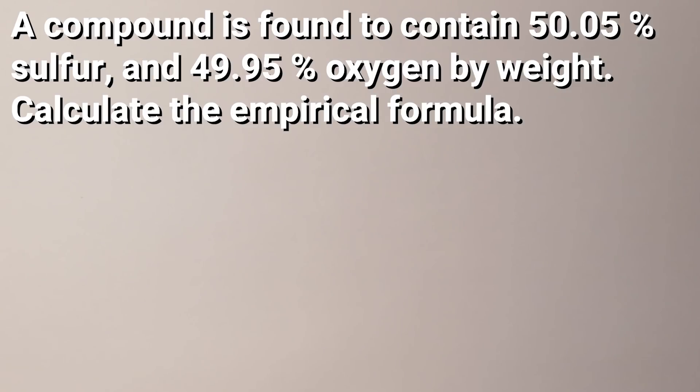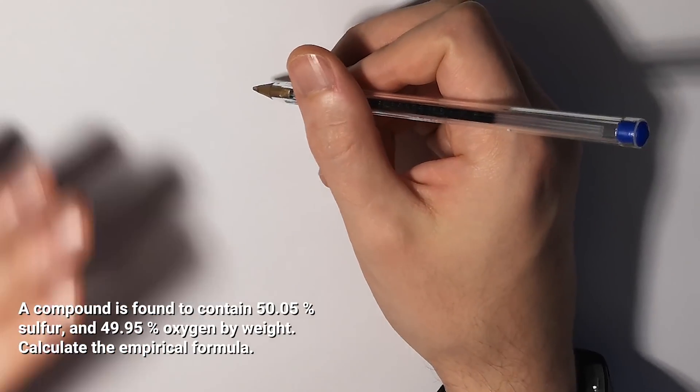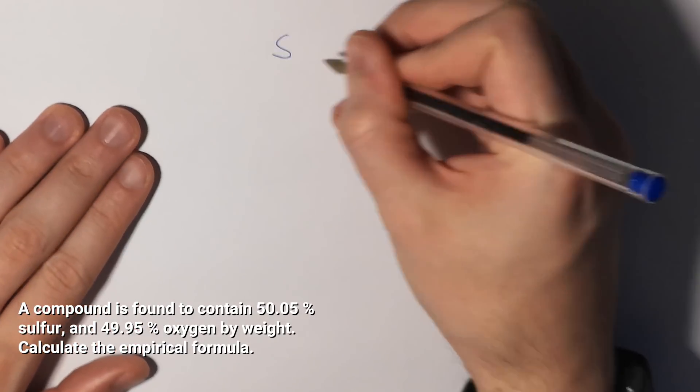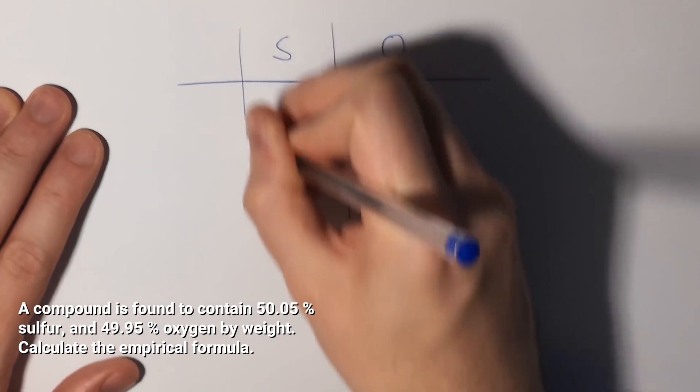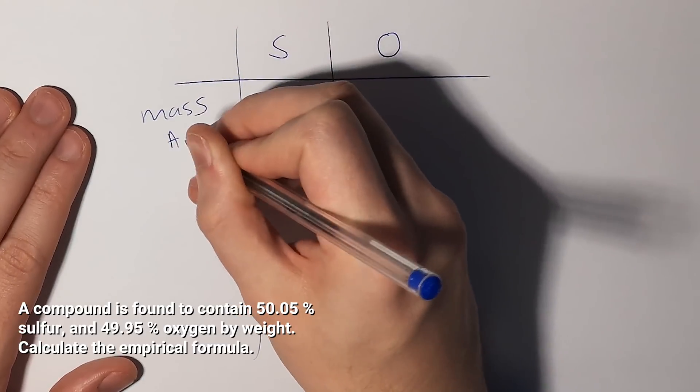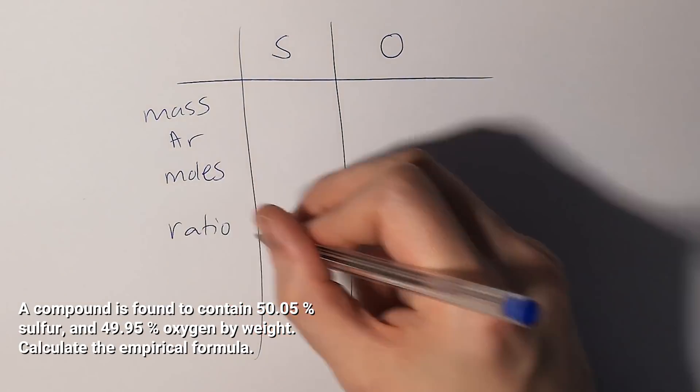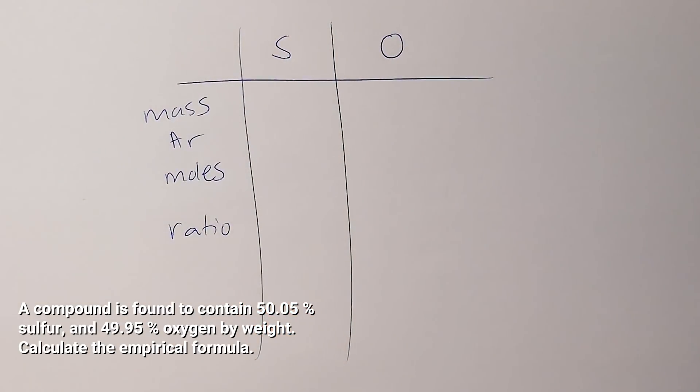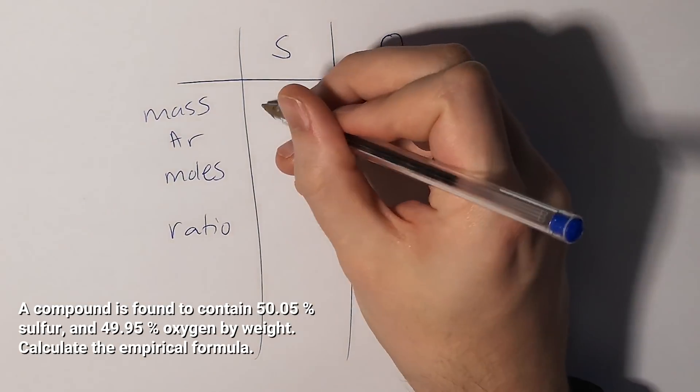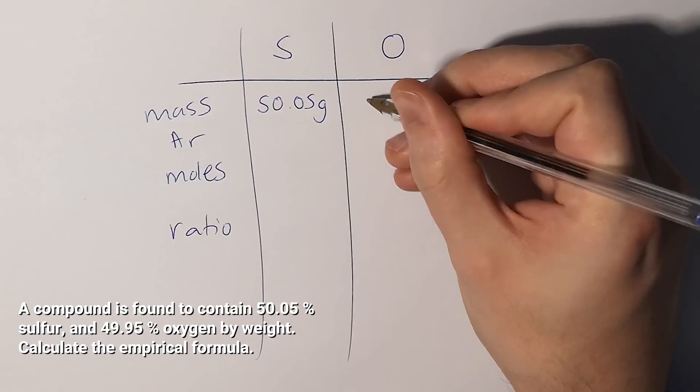What if the question says a compound is found to contain 50.05% sulfur and 49.95% oxygen by weight? We still draw out our table for sulfur and oxygen with mass, AR, moles, and ratio. For sulfur there are 50.05%. If we add that to the 49.95% we get 100%, which means if we assume the total mass of the compound is 100 grams, 50.05% is just 50.05 grams and we can do the same for oxygen, 49.95 grams.